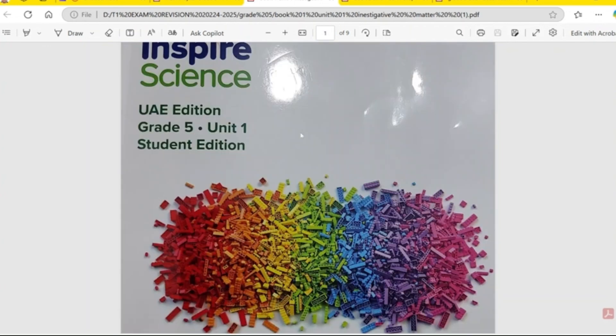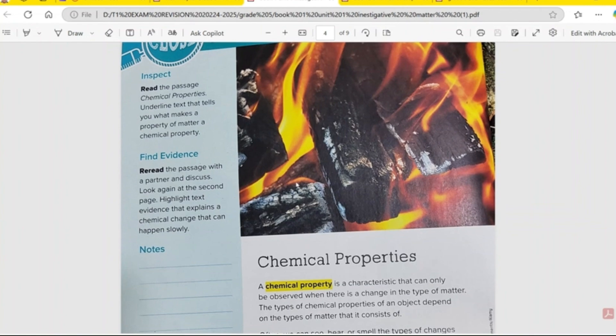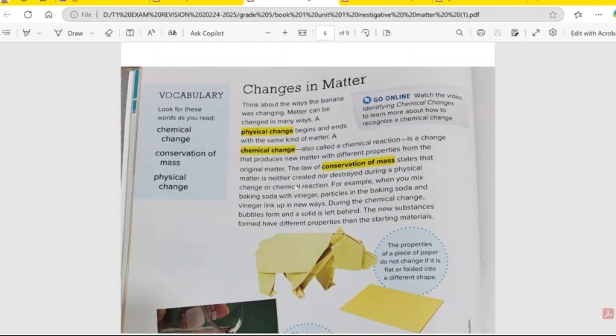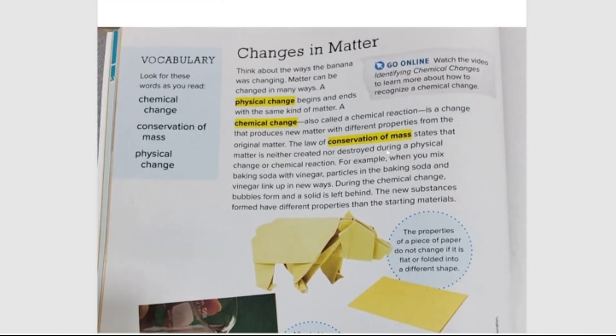Here you can see Book 1, Unit 1 Inspire Science. So the conservation of mass you will find on this page. Here it is, conservation of mass page 40. Conservation of mass states that matter is neither created or destroyed during physical change or a chemical reaction. So mass doesn't change, it stays the same. Mass before equal mass after.